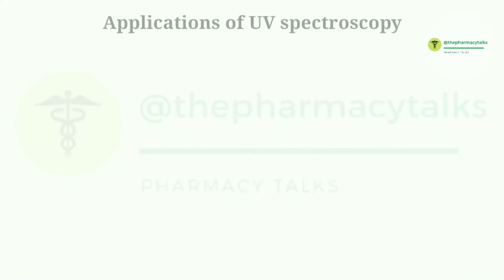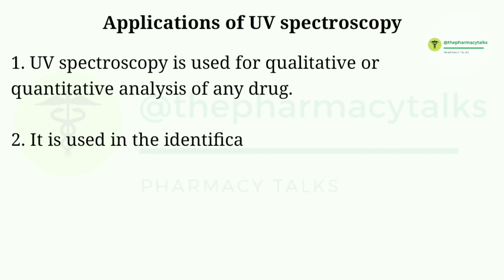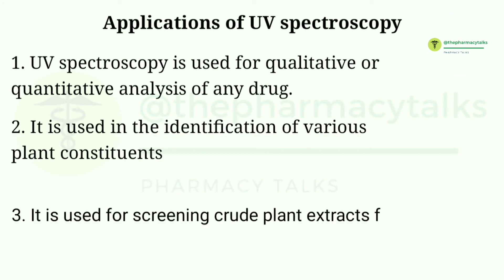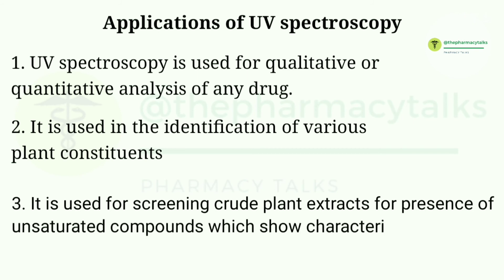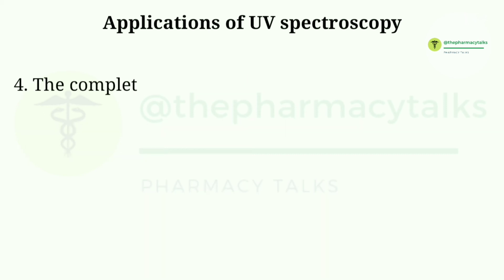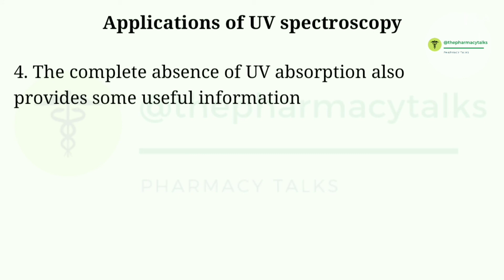Now we'll discuss the applications of UV spectroscopy. UV spectroscopy can be used for qualitative or quantitative analysis of any drug. It is used in the identification of various plant constituents. It is used for screening crude plant extracts for the presence of unsaturated compounds which show characteristic absorption properties. The complete absence of UV absorption also provides some useful information.